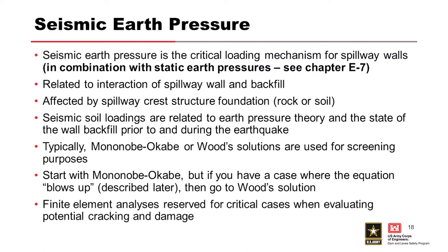Typically we start with Mononobe-Okabe, but at high seismic loads it blows up — you get the square root of a negative number, which happens around 0.7 G peak ground acceleration. It also starts to increase exponentially at higher seismic accelerations, so keep an eye on that. Finite element analysis can model the structure-soil interaction to determine seismic earth pressures, but that's reserved for high-risk cases as it's the most time-consuming and expensive approach.